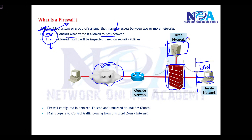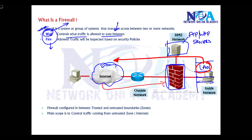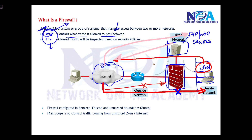There are also DMZs where FTP or HTTP servers are placed. The rule is: users in the LAN should be able to access the internet, but users on the internet should not be able to access anything on the LAN — traffic from internet to LAN should be restricted. At the same time, internet users should be able to access the servers, and LAN users should also access the servers. So we define specific rules, and traffic flows between these networks based on those rules.